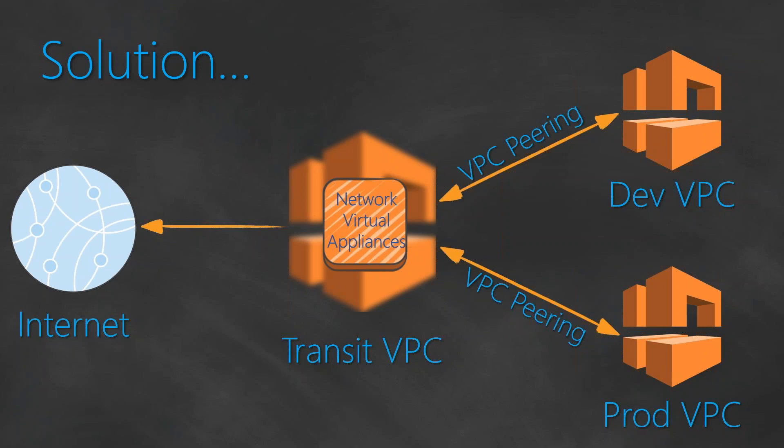Once you build the network virtual appliance, the next step is to configure VPNs for your fraud and dev VPCs. In the VPN you will be giving the routes so that all traffic can be sent to your network virtual appliance. The appliance will have the routes to send the traffic to the internet and return it back to the dev and fraud VPCs. This is a typical configuration used for demo purposes.